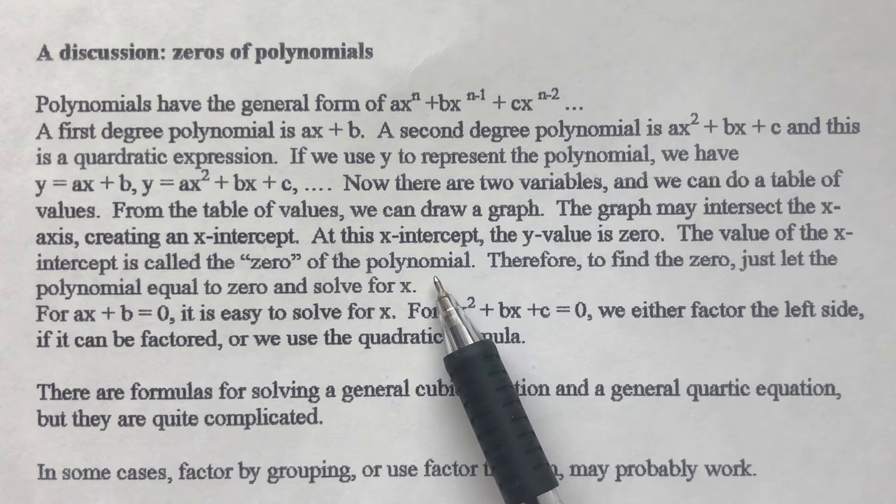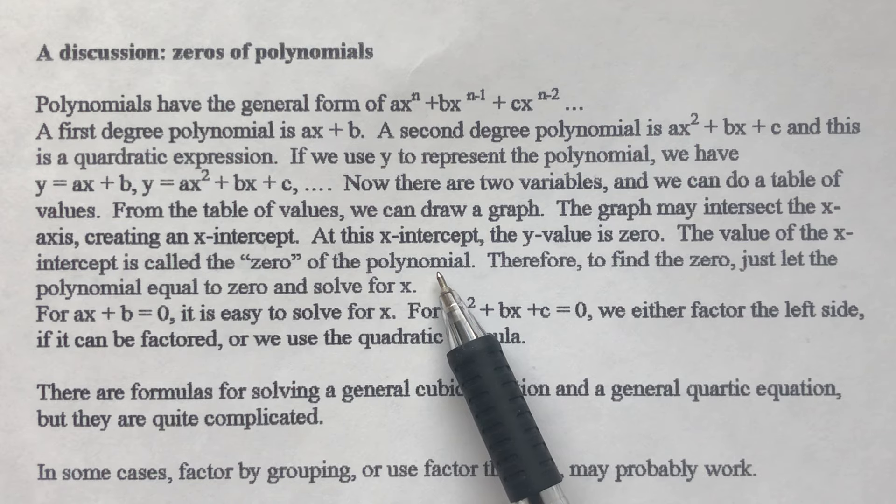When you write a polynomial equal to zero, it is an equation. So to find the zero is to solve the equation for the value of x.